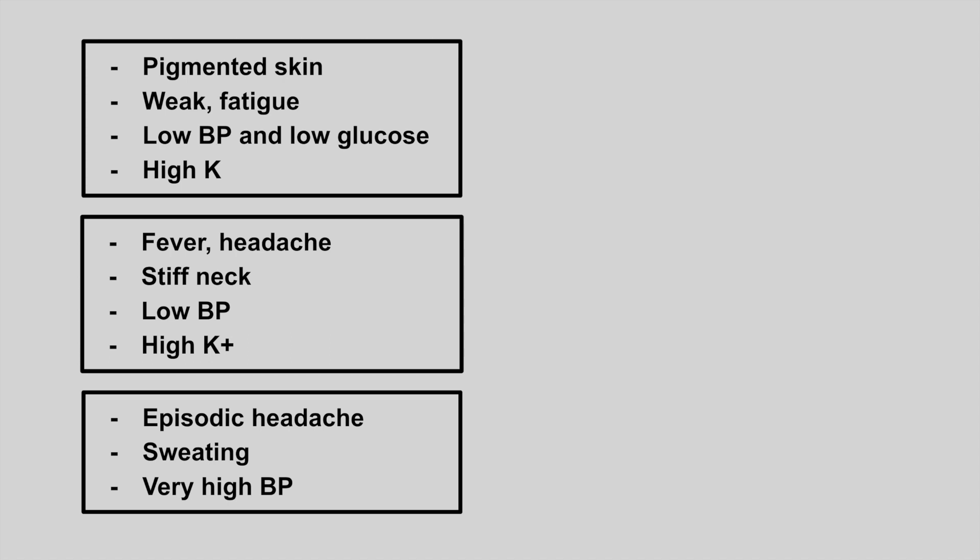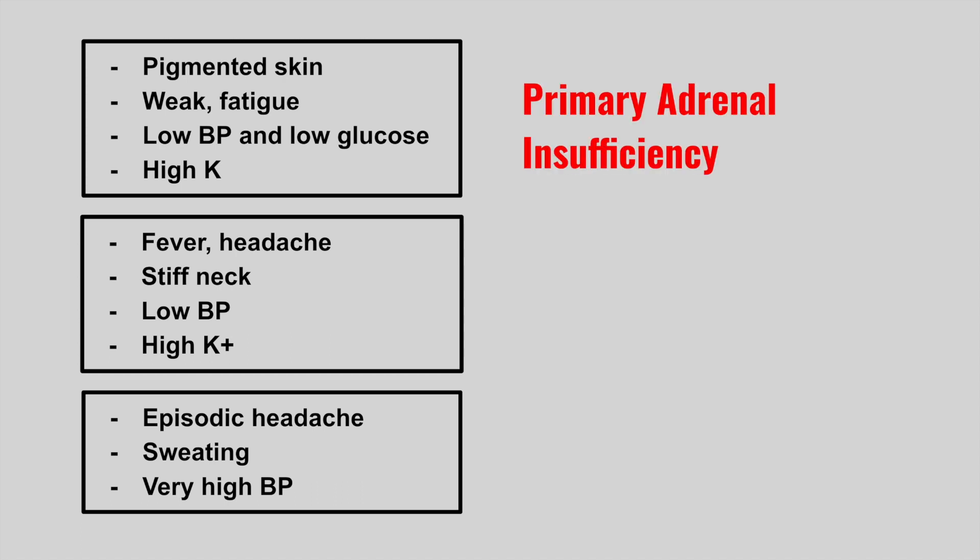The next patient has pigmented skin, weakness, fatigue, low blood pressure, low glucose, and high potassium. This is primary adrenal insufficiency, also called Addison's disease.